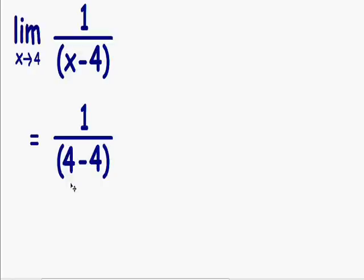So now notice how we have 4 minus 4 in the denominator. 4 minus 4 is equal to 0. So now we have a 0 in our denominator.